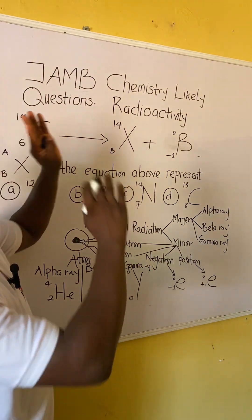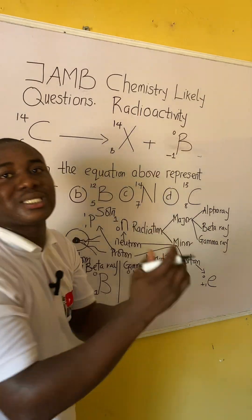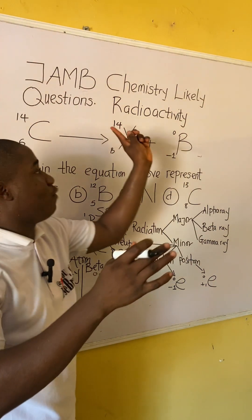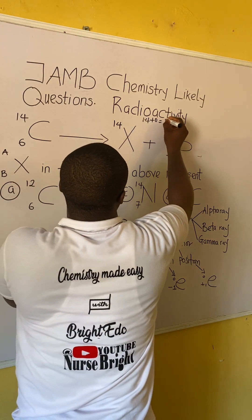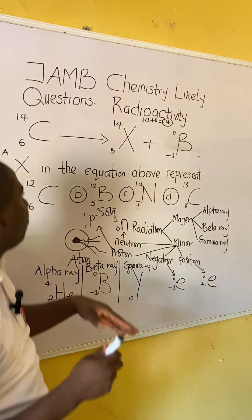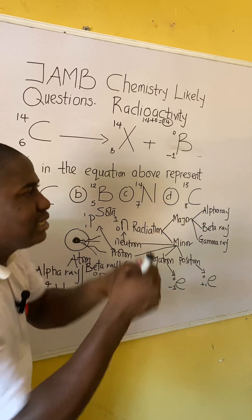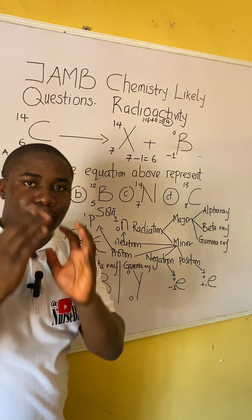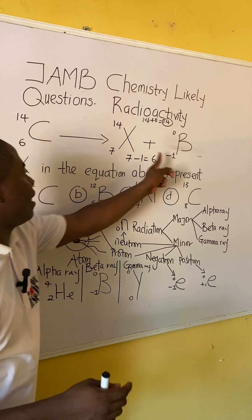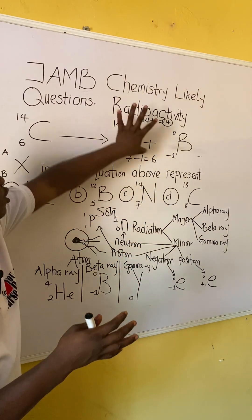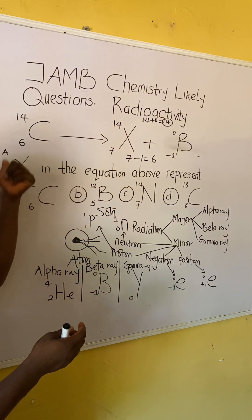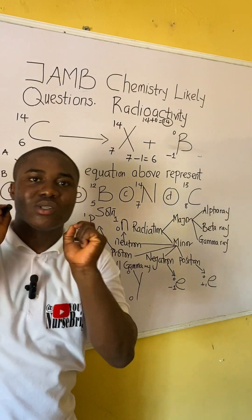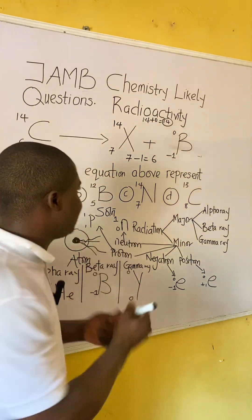At the top part: left side is 14, right side is 14 plus 0, which is still 14 — so the top is balanced. Now for the bottom: left side is 6 for carbon, and beta contributes minus 1. So the unknown element's bottom number must be 7, because 7 minus 1 equals 6, which matches the left-hand side. The answer is therefore x = 14 on top and 7 on the bottom — which corresponds to option C.